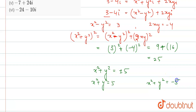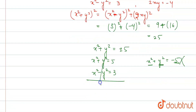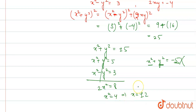Since x squared plus y squared cannot be negative, x squared plus y squared equals 5. Combined with x squared minus y squared equals 3, adding gives 2x squared equals 8, so x squared equals 4, which implies x equals plus or minus 2.